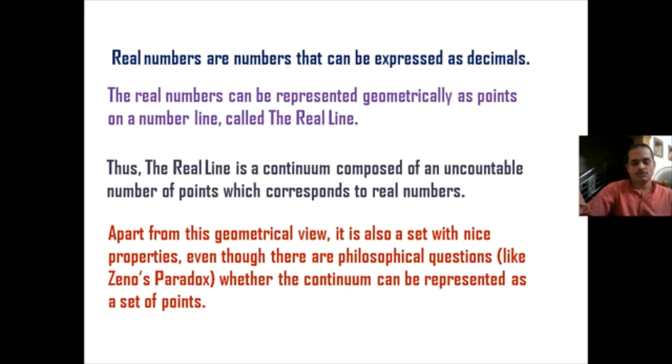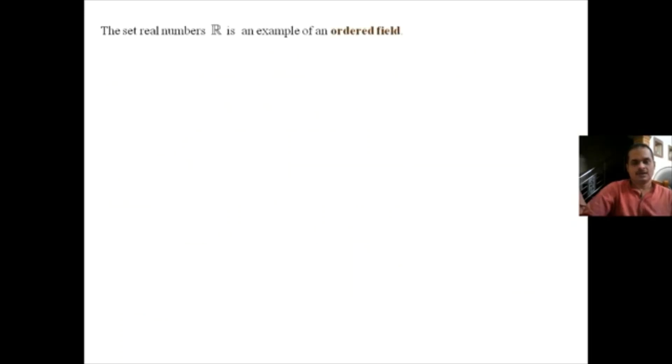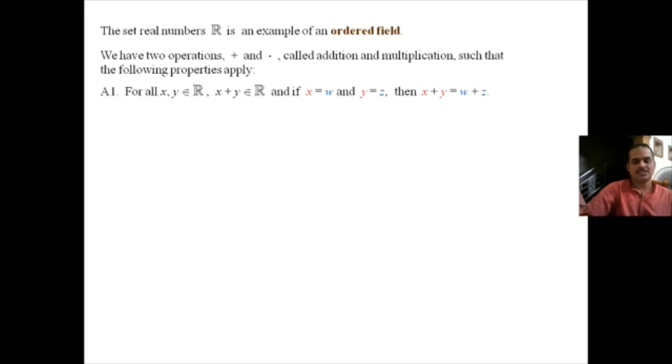We will now discuss some properties of the set of real numbers. The set of real numbers, denoted by R, is an example of an algebraic structure called an ordered field. On the set of real numbers, we have two binary operations called addition and multiplication. The first property for addition is that for all real numbers x, y, x plus y is again a real number, and if x equals w and y equals z, then x plus y equals w plus z.